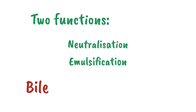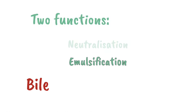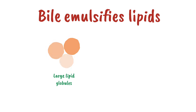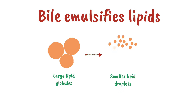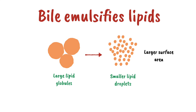The second job of bile is emulsification. Bile emulsifies lipids, meaning it takes large lipid globules and breaks them down into smaller droplets. This provides a larger surface area for enzymes to work.